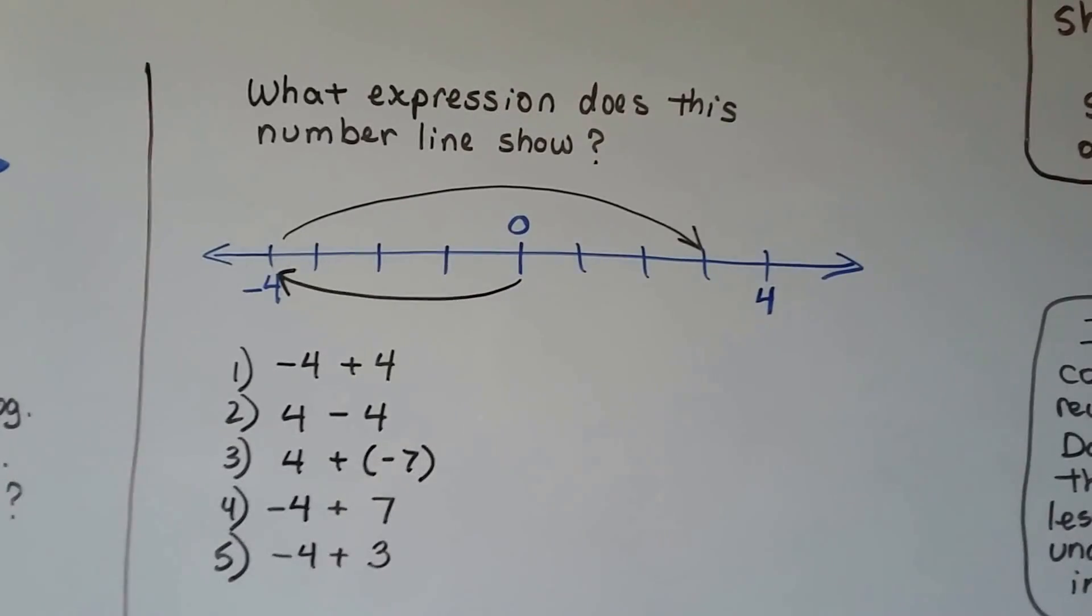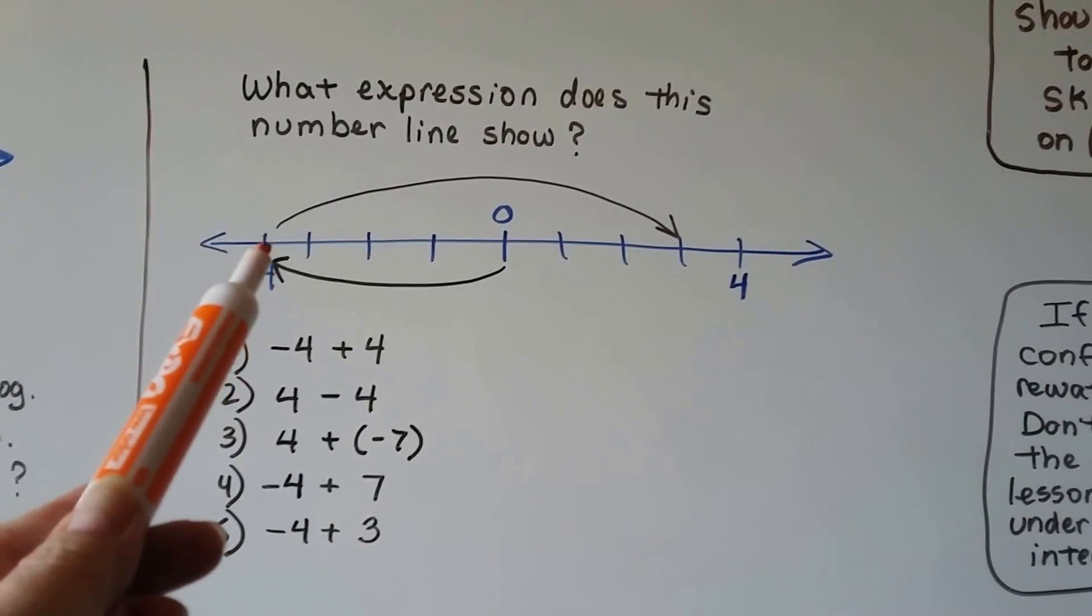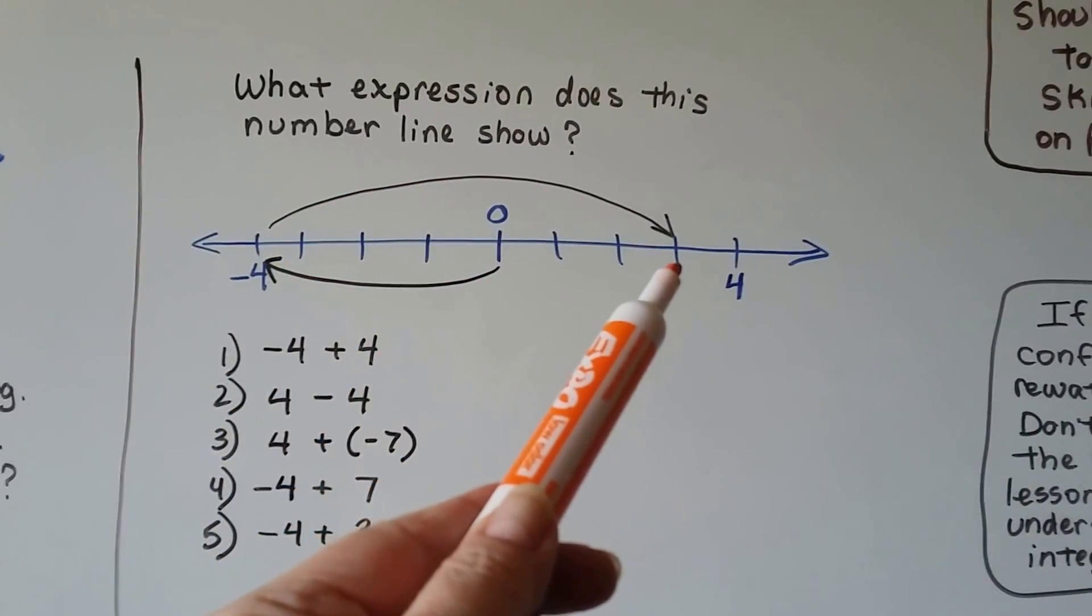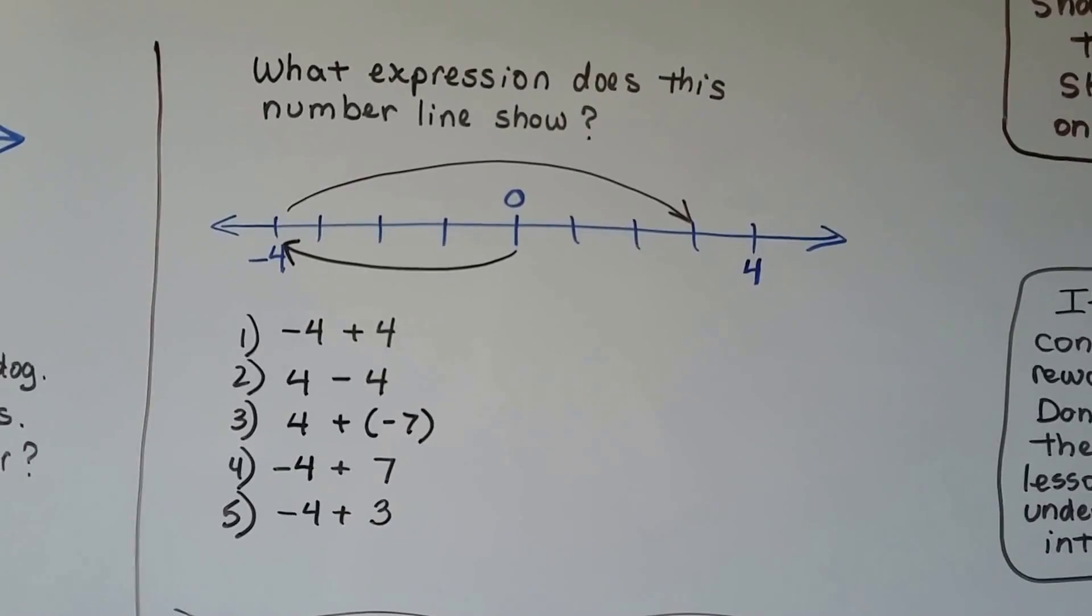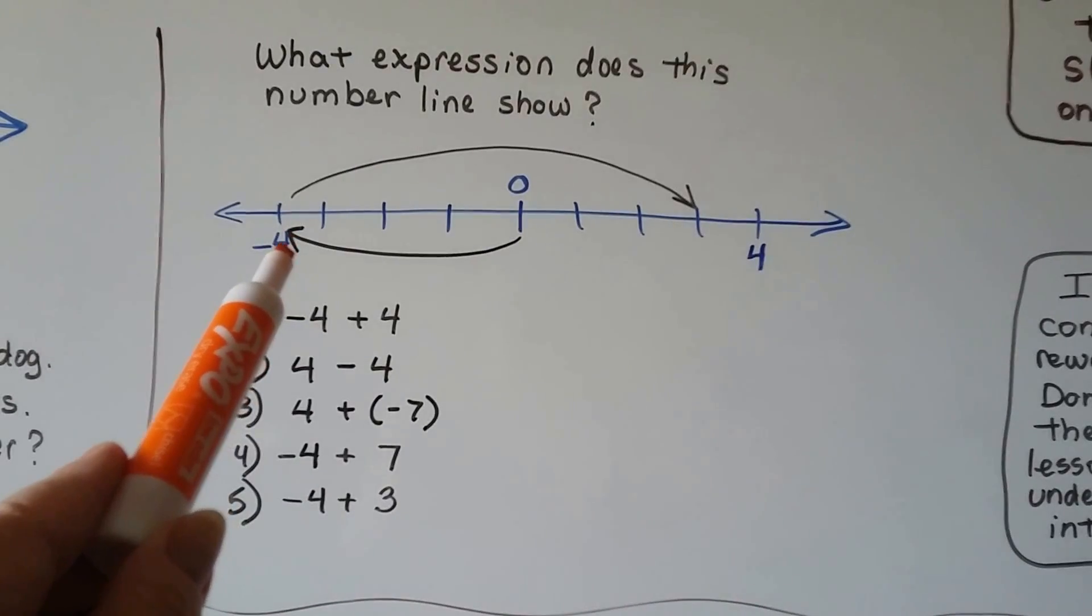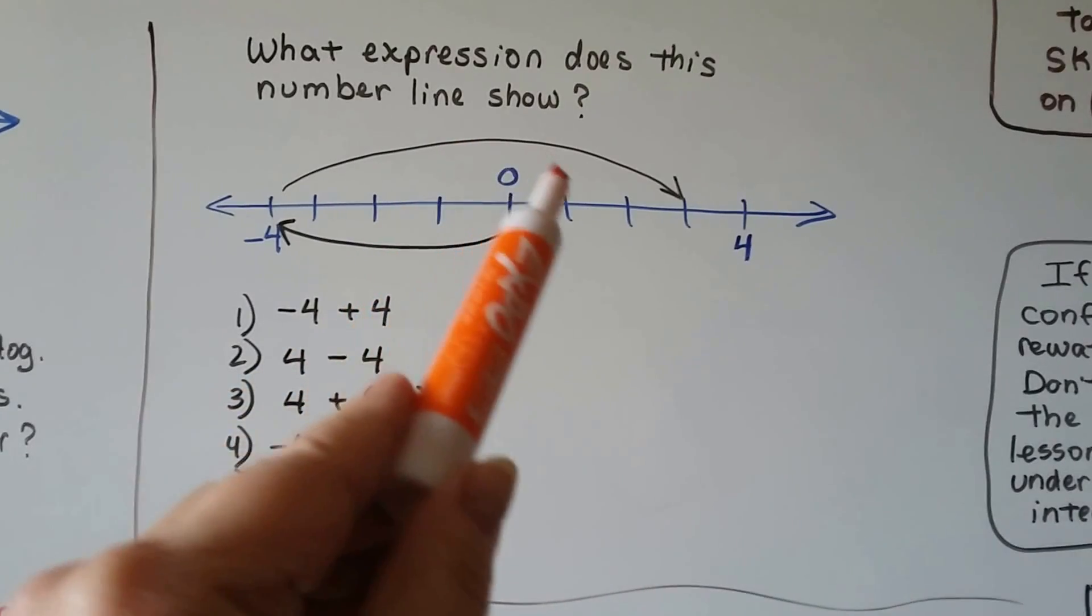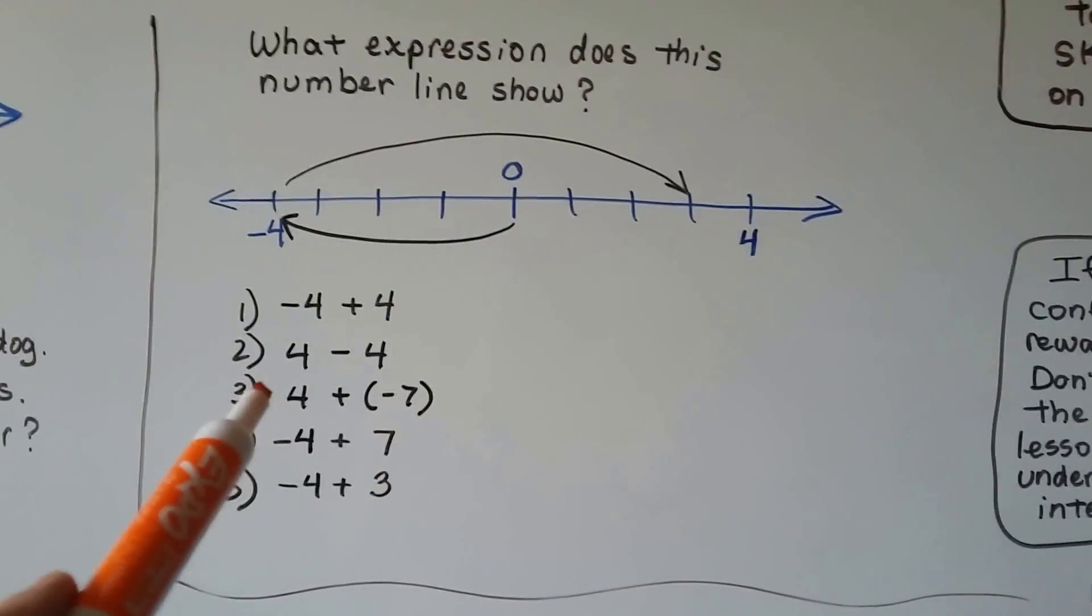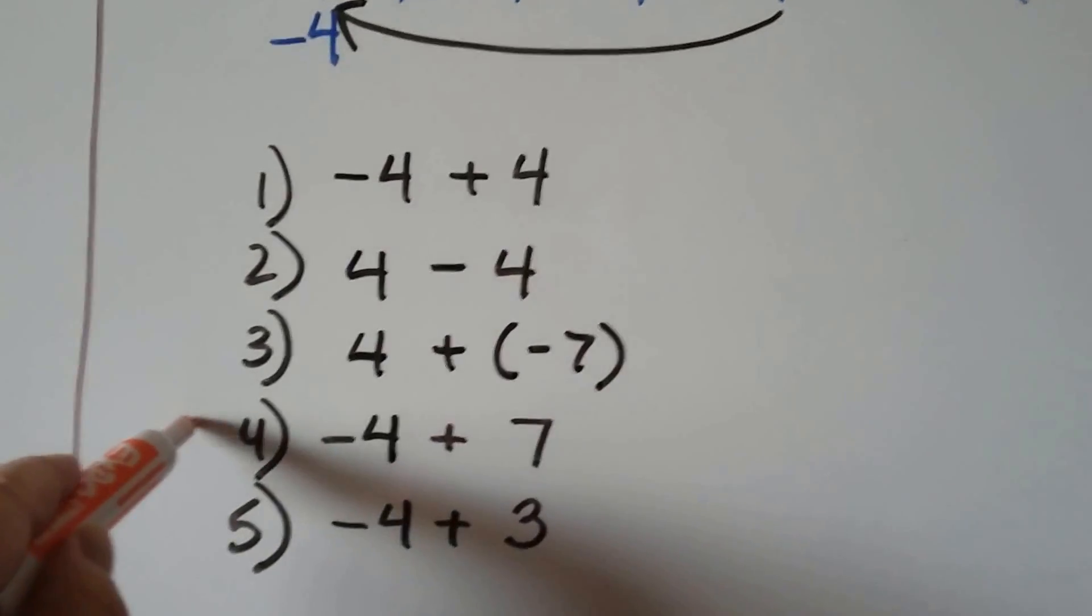If you look, it went from the zero to the negative 4 and then we've got another arrow jumping all the way back up here and that would be a 3, wouldn't it? If that's the 4, that's a 3. So it went negative 4 and then it jumped all the way up here. How many did it go? 1, 2, 3, 4, 5, 6, 7. So if you said negative 4 plus 7, this one, then you're right.